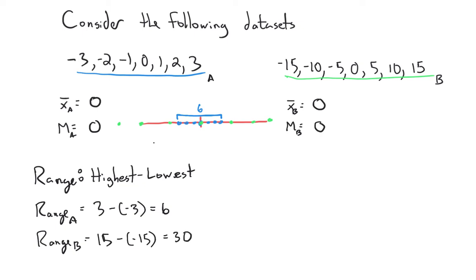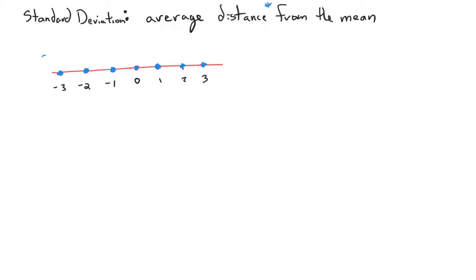The range is saying that the distance between the largest and smallest data point in our set is 30. This is a pretty quick and dirty measure. However, range is really affected by outliers — it doesn't capture at all what's going on in the middle of a data set. So we need something that's a little more precise, and that's what we're going to discuss. That measure is called the standard deviation.